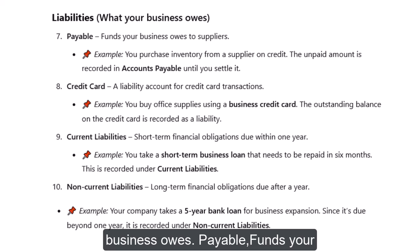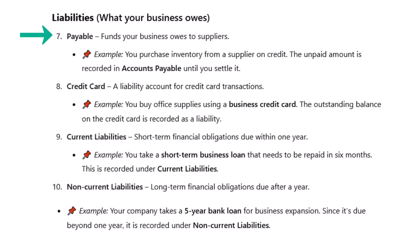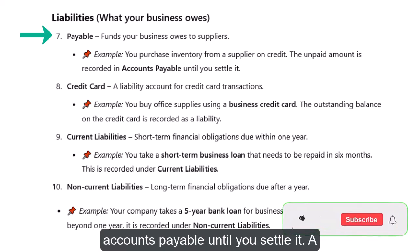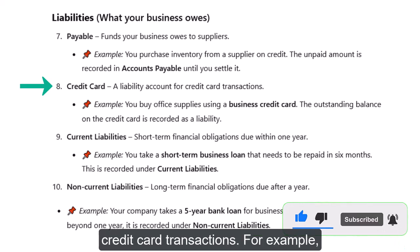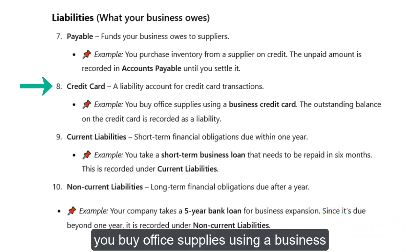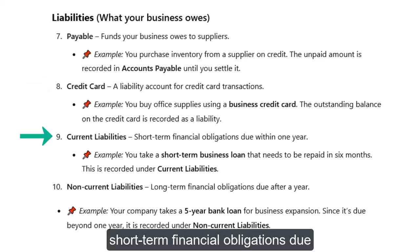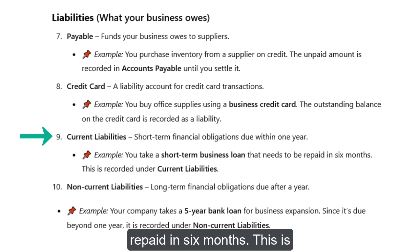Liabilities — what your business owes. Payable: funds your business owes to suppliers. For example, you purchase inventory from a supplier on credit. The unpaid amount is recorded in accounts payable until you settle it. Credit Card: a liability account for credit card transactions. For example, you buy office supplies using a business credit card — the outstanding balance is recorded as a liability. Current Liabilities: short-term financial obligations due within one year. For example, you take a short-term business loan that needs to be repaid in six months — this is recorded under current liabilities.